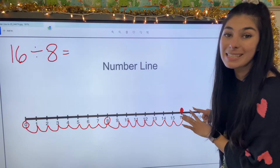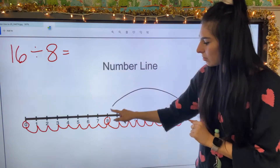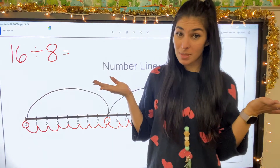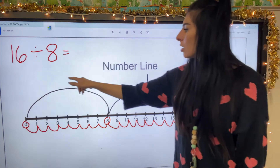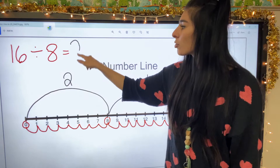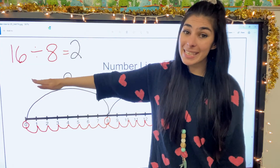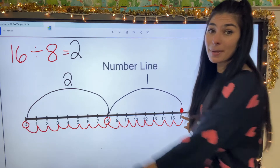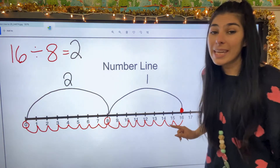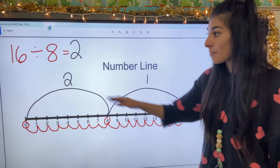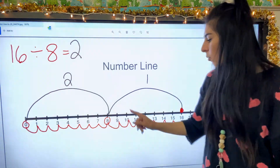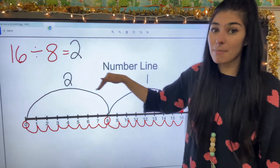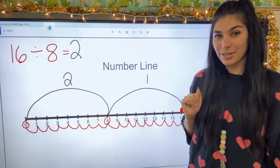Starting at 16 because that's our dividend. I circled eight and I circled zero. So how many big jumps did I do? I did one, two — making our quotient two. So 16 divided by eight equals two. We started at 16 because that's our dividend. We counted little jumps by eight because we're dividing by eight. We circled those numbers and then did our final big jumps to connect them. Big jumps are our quotient, which is two.